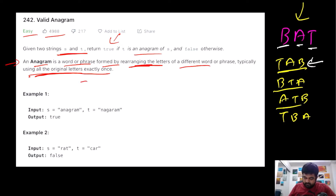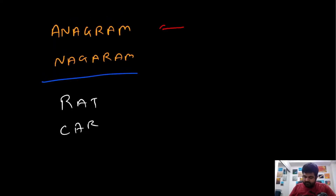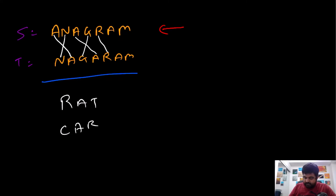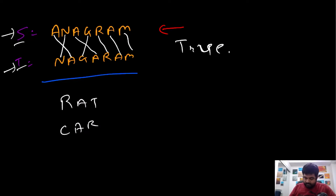We have a couple of examples. In example one, we are given two words — S and T — that are anagrams. We check by cancelling out or comparing letters: A is present, N is present, A again, G, R, A, and M — all letters present in S are also present in T in the same number of occurrences, so we return true. In example two, S is 'rat' and T is 'car'. R and A are present in both, but T is not in T's string and C is not in S's string, so we return false.